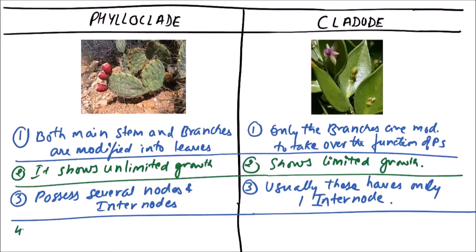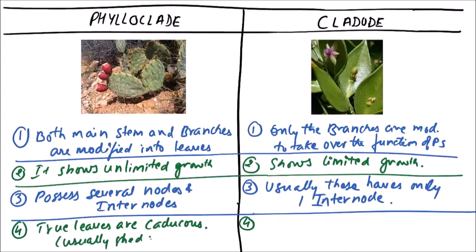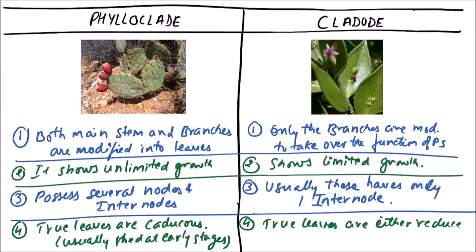The next difference is that in phylloclades, true leaves are caducous, meaning they are usually shed at early stages of development. In cladodes, the true leaves are either reduced to scales or spines.